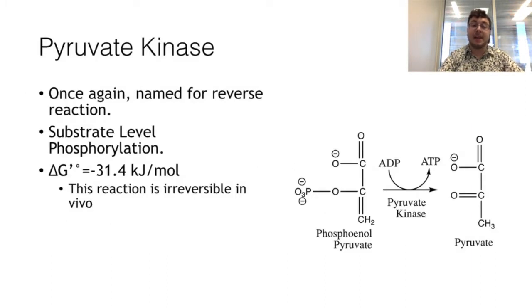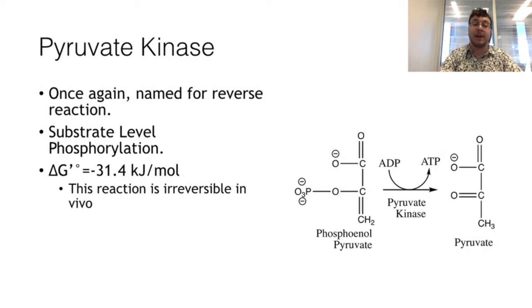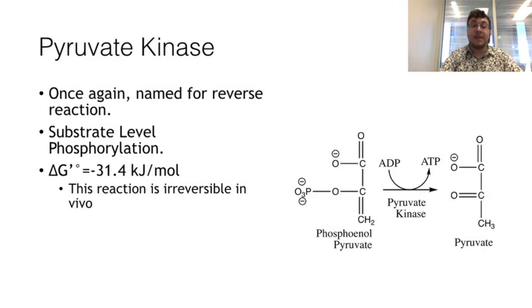The tenth and final step is catalyzed by pyruvate kinase, named for the first reaction discovered in vitro. This step creates another ATP molecule via substrate-level phosphorylation, and for each glucose this occurs twice. This reaction is extremely favorable and considered irreversible. For gluconeogenesis — the reverse pathway of creating glucose from pyruvate — that pathway actually skips this step because it requires too much energy to go in reverse. Pyruvate is now prepared and ready to undergo one of its many fates, such as pyruvate processing, fermentation, or gluconeogenesis.